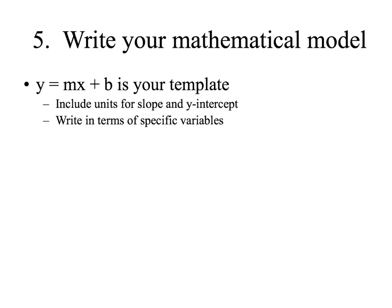The last step is to use our linear graph to write our mathematical model. Y equals MX plus B is really kind of your template, so I'm going to write it really big here and use it to figure out my equation. When I see Y, I want to write the variable that's on the Y axis. If I go back to my graph, we had position, which I'll just abbreviate with a P, on the Y axis.